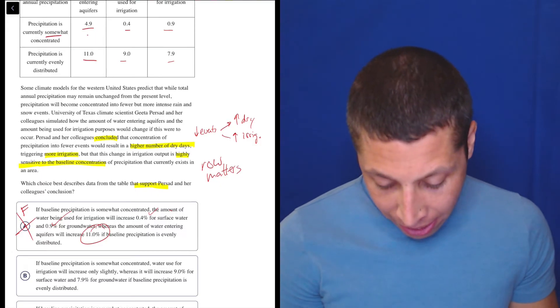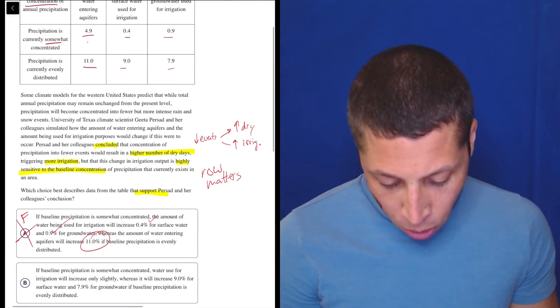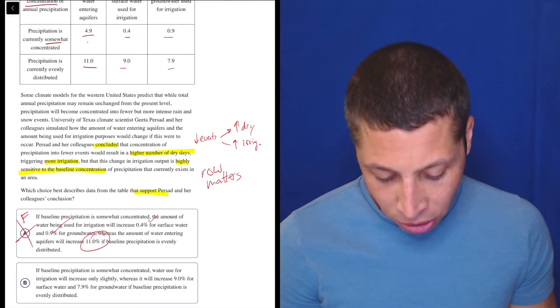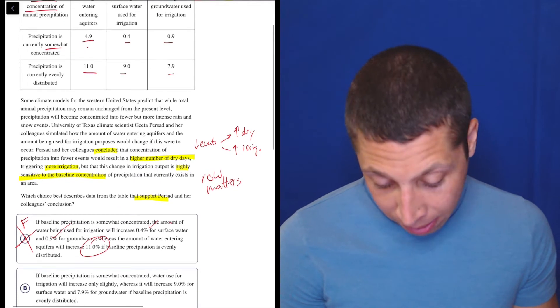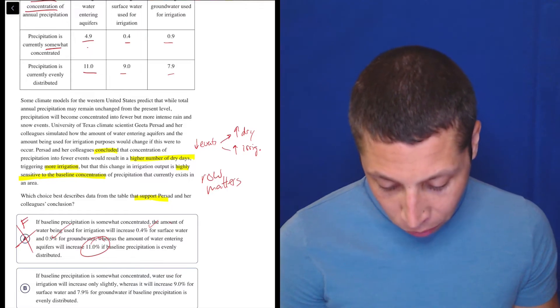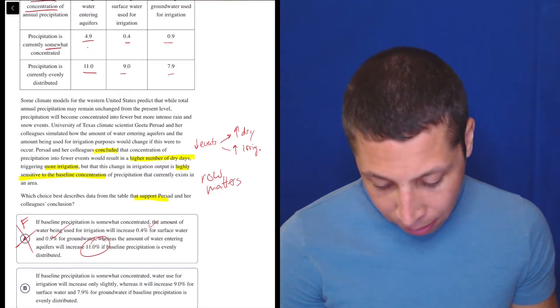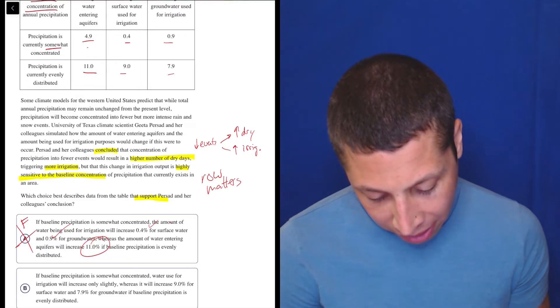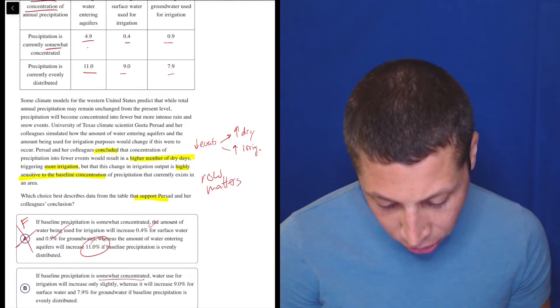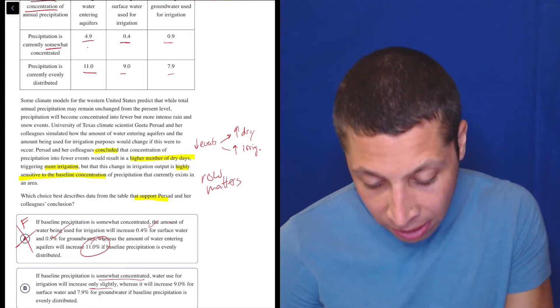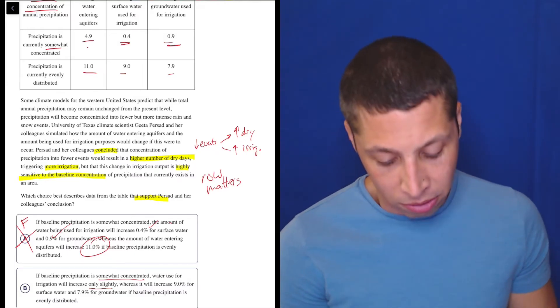Choice B: if baseline precipitation is somewhat concentrated, water use for irrigation will increase only slightly. Okay, yeah, that seems right. Whereas it will increase 9% for surface water. Nope. And 7.9%, oh, wait, 7.9% if baseline precipitation is evenly distributed. Yeah, okay, wait, actually that's true. I misread what I was about to say. So if it's somewhat concentrated, it's only slight, because look at these numbers, 0.4, 0.9. They're very small. And they're specifically talking about irrigation, so it's the 0.4.